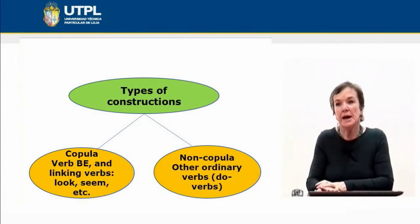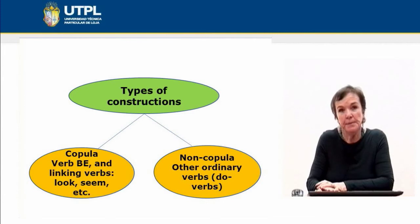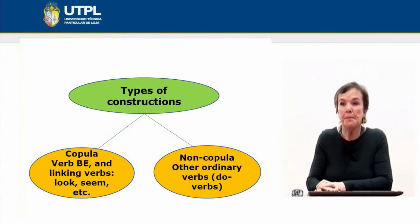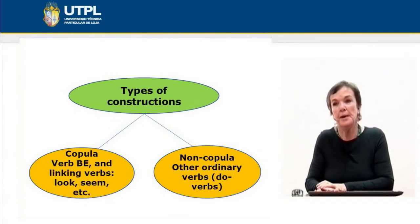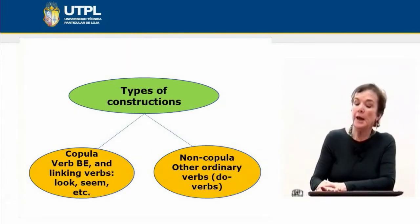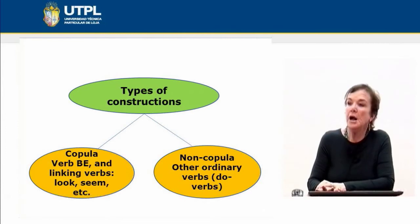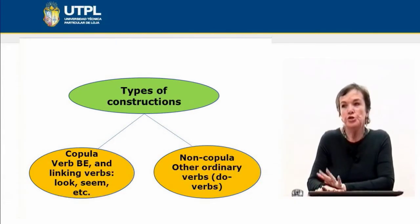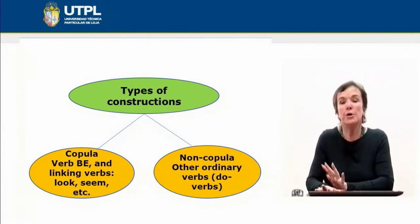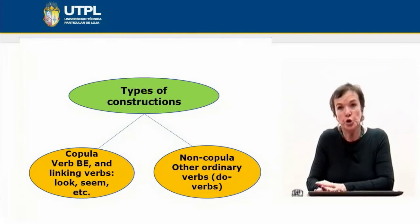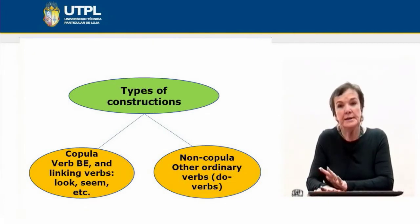Also, some linking verbs such as 'look,' 'seem,' 'become,' and 'appear' are known or function as copular verbs. On the other hand, we have non-copular verbs. Those are all ordinary verbs in the language which need the auxiliary 'do' to form questions and negatives.